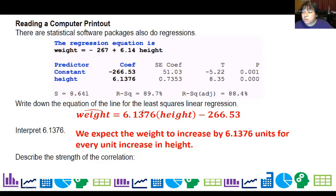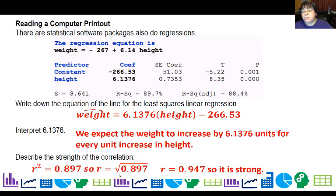How would I describe the strength of the correlation? You're probably going, I don't see an R. And you don't. But I do see an R squared. And R squared is 0.897. So R must be the square root of that. R is 0.947. So it's quite strong.